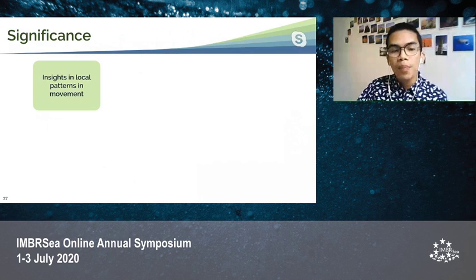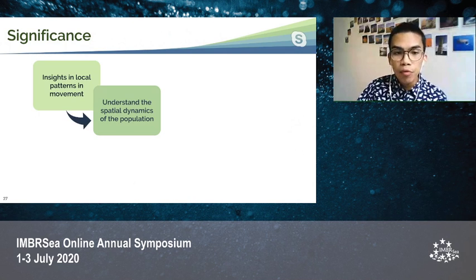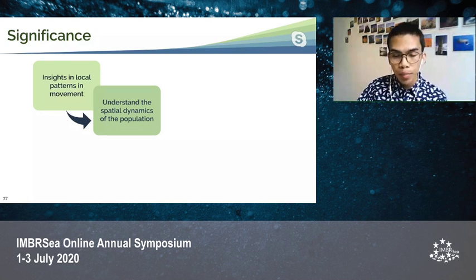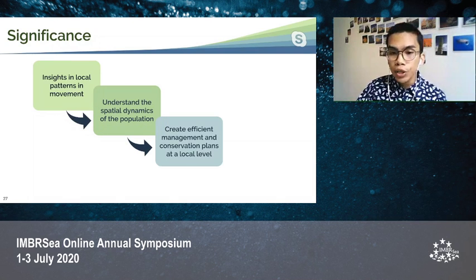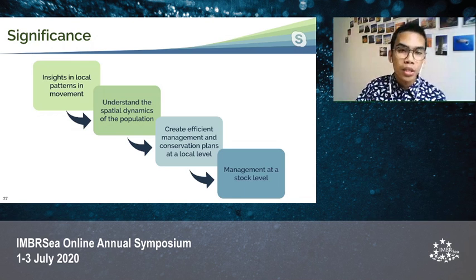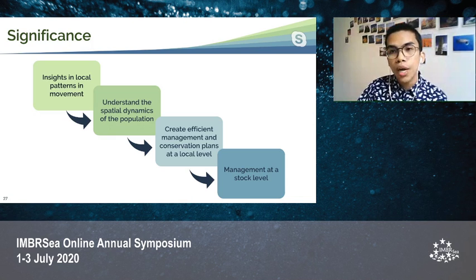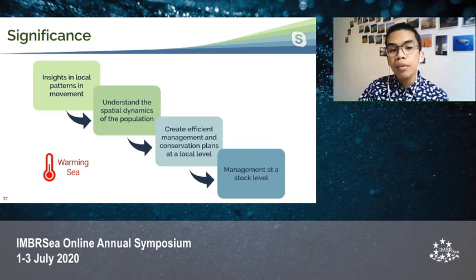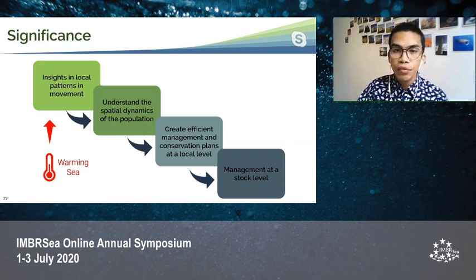Our study has provided insights into local patterns of movement, which helps us understand the spatial dynamics of the population. This can help in creating efficient management and conservation plans at the local level, and support management at the stock level. This study has also shown that water temperature has an effect on the movement of cod, and thus with warming waters, movement patterns will be affected. Management and conservation plans must be adapted with consideration of this warming sea.